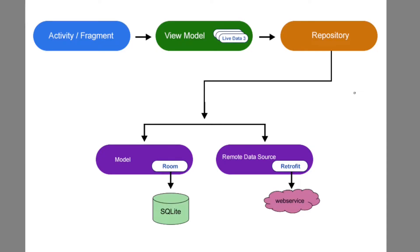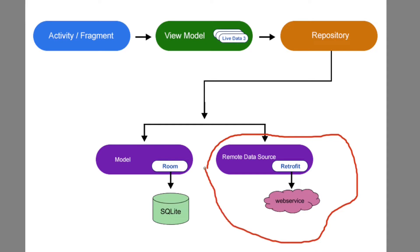Looking at our MVVM diagram, the repository contains two data sources. The first one is the local data source and the second one is the remote data source. In the remote data source, we are using Retrofit to call the web service for login validation.